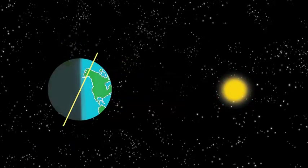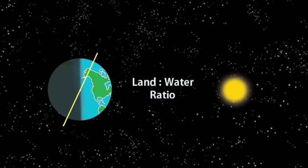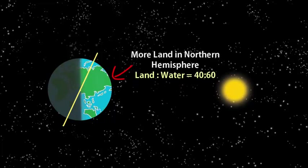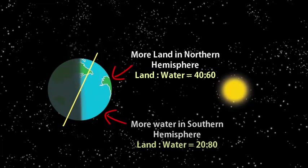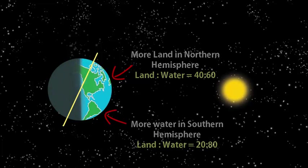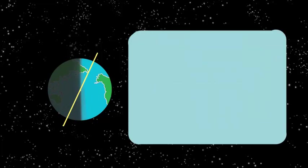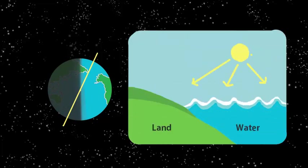This has to do with the amount of land to water ratios in two hemispheres. In the Northern Hemisphere there is lot more land while the Southern Hemisphere has lot more water. Land absorbs heat much faster and gets heated up much faster as compared to water.